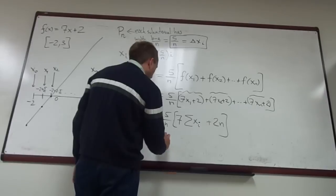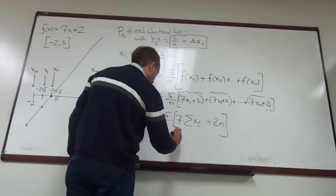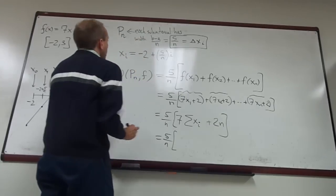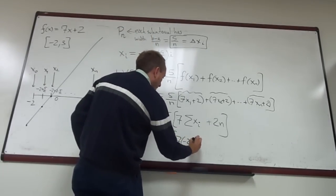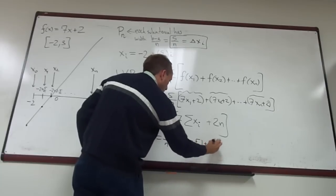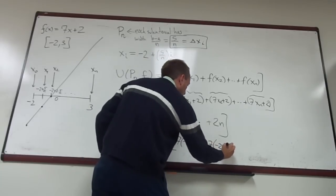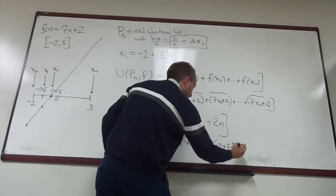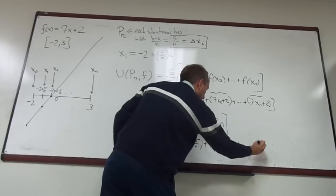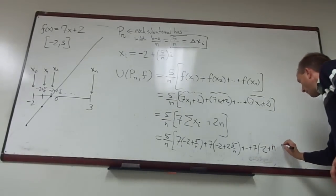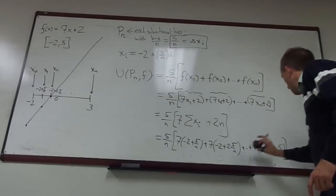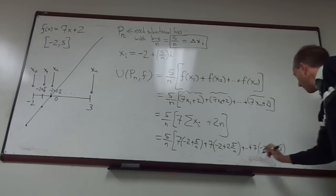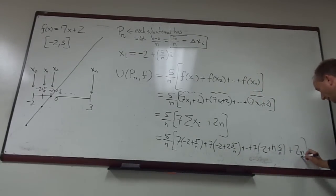So let's see, each of my xis is each one of these things. So the 7 is being multiplied by, I'm just going to say the sum of the xis for a moment, where i goes from 1 to n. So this is 5 over n times 7 times, well, x1 will be negative 2 plus 5 over n, and x2 will be negative 2 plus 2 times 5 over n, etcetera, 7 times negative 2 plus n times 5 over n. And then don't forget that we also have at the very end of all of that plus 2n.